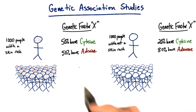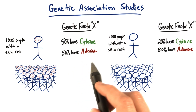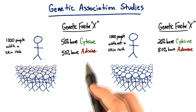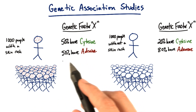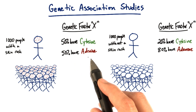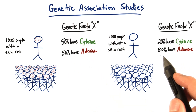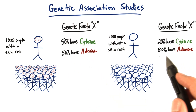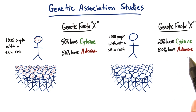At that same position, the only other option is an adenine. In our affected population, the remaining 50% have an adenine. And in our control population, the remaining 80% have the adenine.